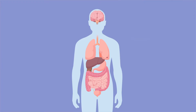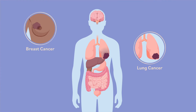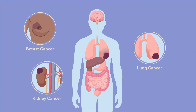Most cancer cells stick together as they grow and form a solid lump called a tumor. These solid tumors can grow into and destroy healthy body tissue. Examples of cancers that form solid tumors are lung cancer, breast cancer, and kidney cancer.